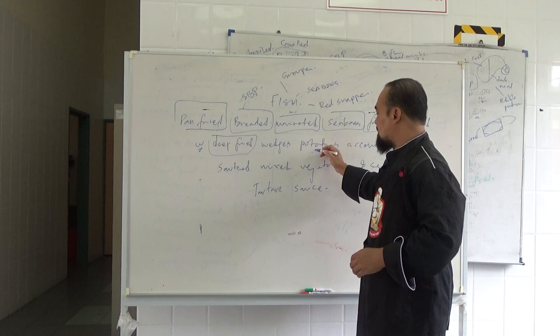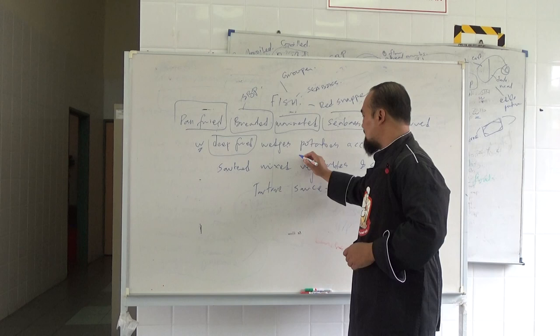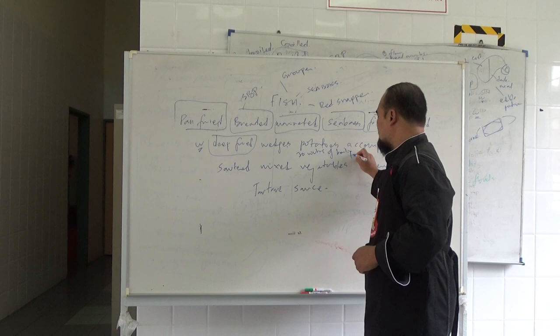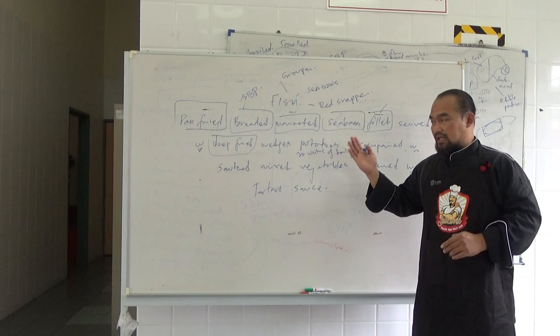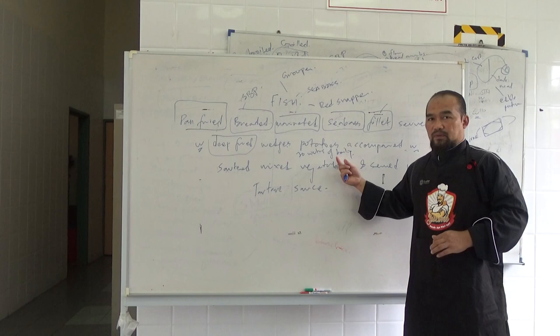Okay, so before we do the cutting, the whole potato we need to wash it clean. Okay, and then boil it for around 30 minutes of boiling. Okay, after that only we are going to cut it. Okay, and then we are going to sprinkle or dip it in flour and paprika, salt and pepper as well.